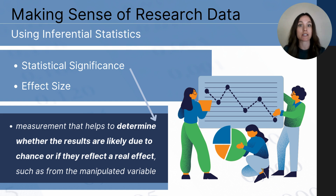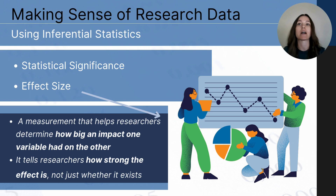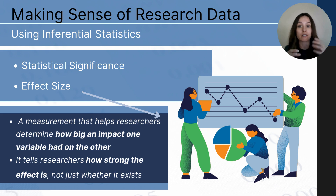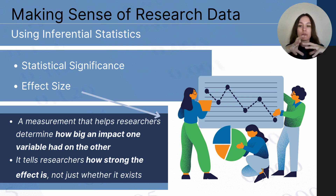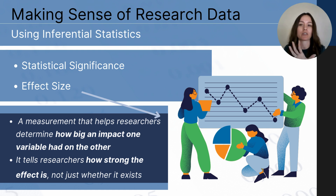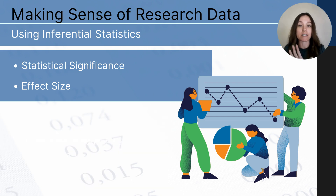Another important concept is effect size, which helps us understand how big or important the results are beyond just whether they are statistically significant. For example, comparing two groups — boys and girls — a large effect size means there is a noticeable, large enough difference in results. A small effect size means the difference is not very noticeable. Effect size helps us make general judgments about whether results are a big deal or just a small difference. In summary: statistical significance tells you if the difference is likely real and not due to chance, while effect size tells you how big or important that difference is.